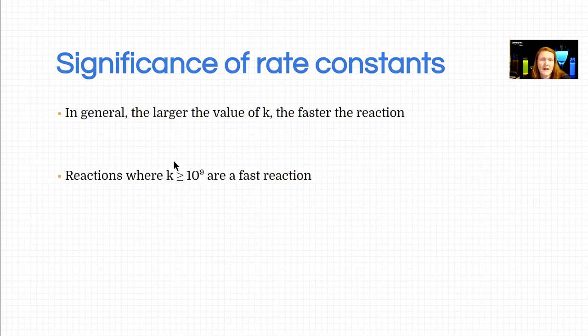So reactions that happen on the scale of something you can watch in a benchtop chemistry experiment are going to have values that are very big, 10 to the 9, or even higher than that. So those are relatively fast reactions, especially when you think about like rust forming on a ship or geological processes, those values are going to be like 10 to the negative something.